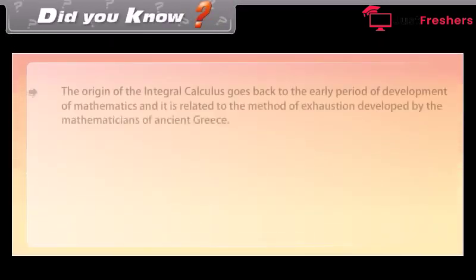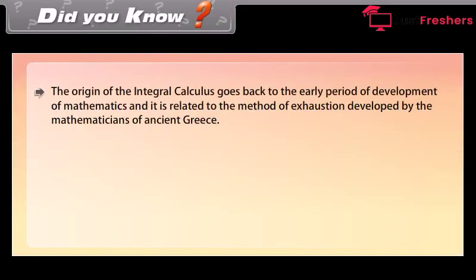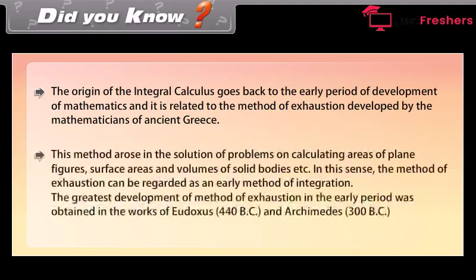Did you know? The origin of integral calculus goes back to the early period of development of mathematics, and it is related to the method of exhaustion developed by mathematicians of ancient Greece. This method arose in the solution of problems on calculating areas of plane figures, surface areas, and volumes of solid bodies. The greatest development of the method of exhaustion was obtained in the works of Eudoxus (440 BC) and Archimedes (300 BC).